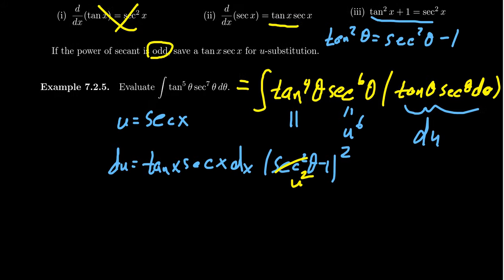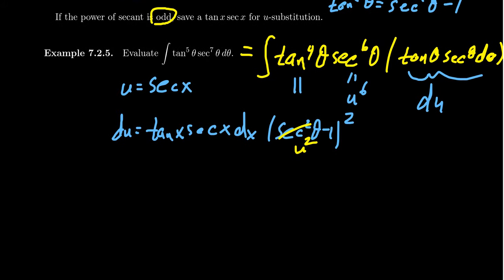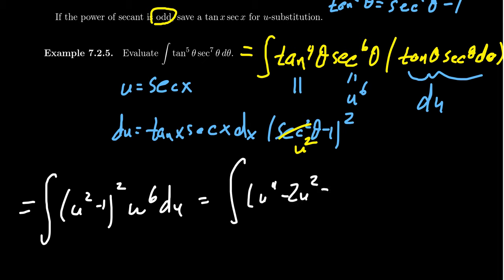So employing this u substitution, our integral can be changed into u squared minus one squared times u to the sixth du. And so this is a nice polynomial expression. We can multiply this thing out. First, FOIL out the u squared minus one squared. If we do that, we end up with u to the fourth minus two u squared plus one times u to the sixth du.